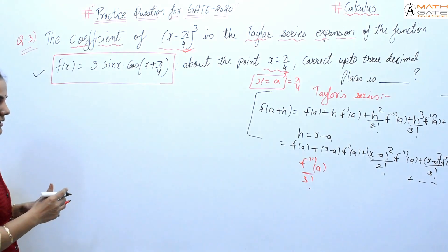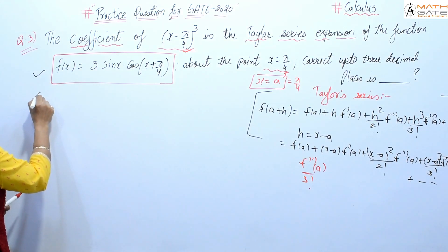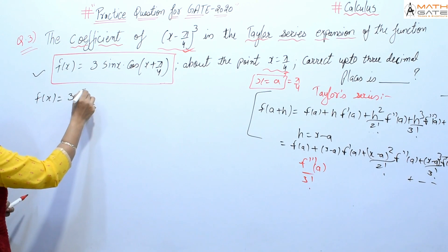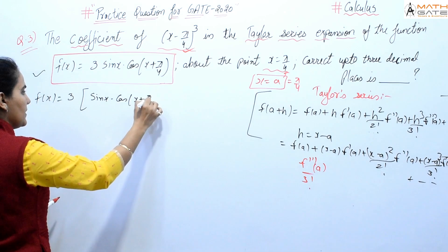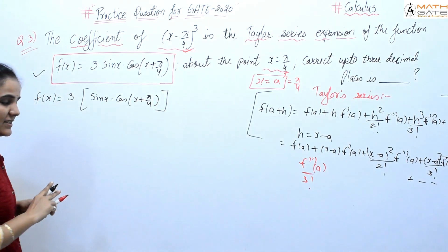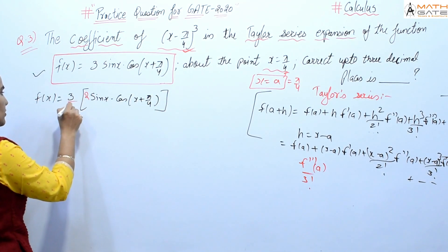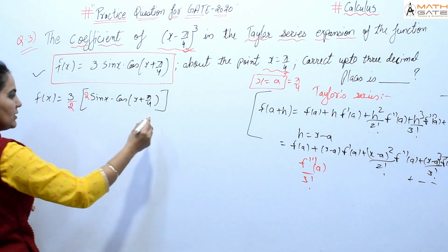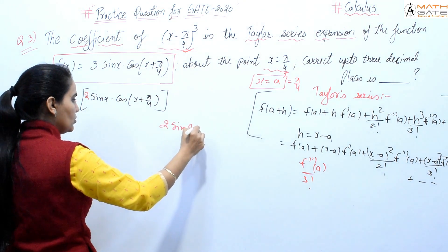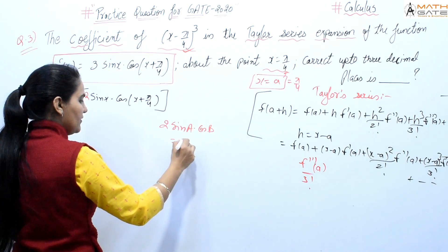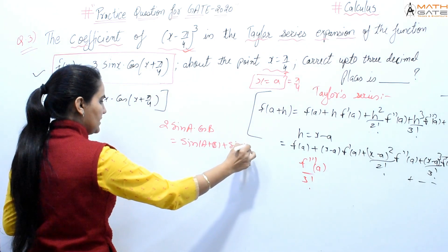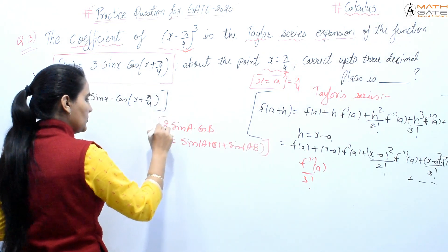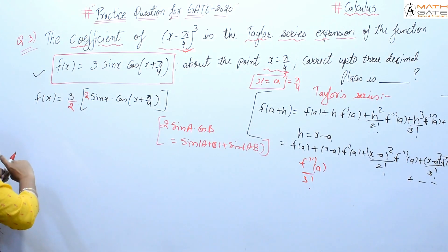Let's first simplify the given function. f(x) = 3sin(x)cos(x + π/4). Multiply and divide by 2, then apply the formula 2sin(a)cos(b) = sin(a+b) + sin(a-b).